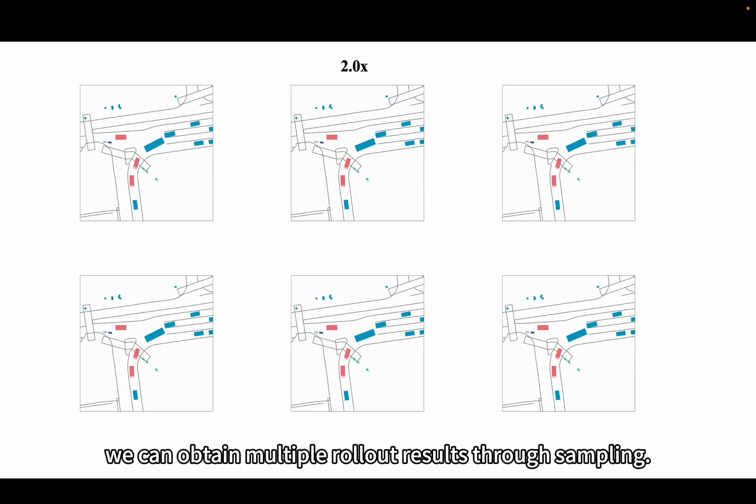In Keygrass, we can obtain multiple rollout results through sampling.